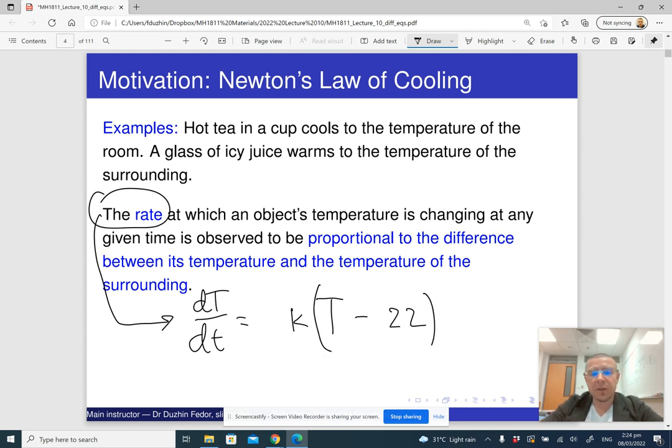So another thing that I should note is that the tea is cooling down, which means that the temperature is decreasing. So the first derivative should be negative. So which is why I'm going to write a negative sign here, assuming that K is a positive number.